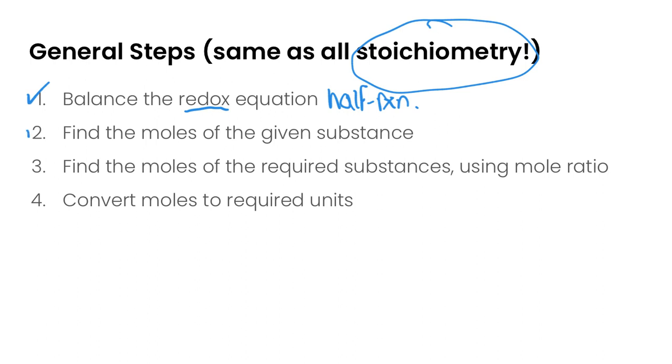The second step, find the moles of the given substance, so this is the same as in any other stoichiometry problem. We're then going to use mole ratios to find the moles of the required substance, and finally we're going to convert back those moles to the required units in the problem.